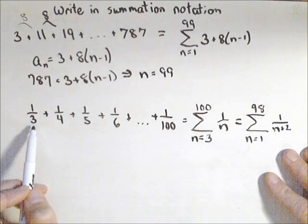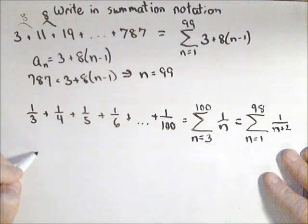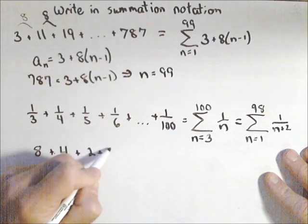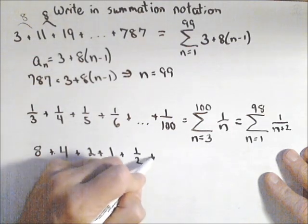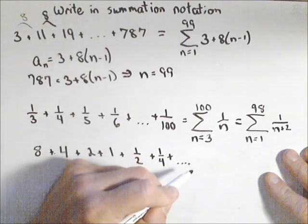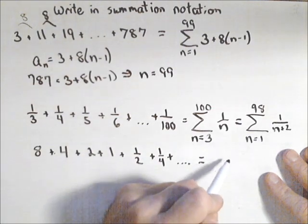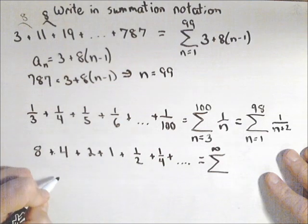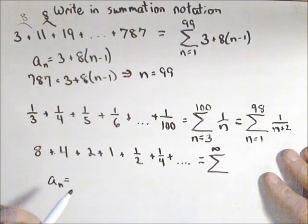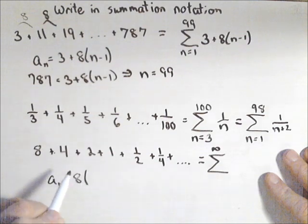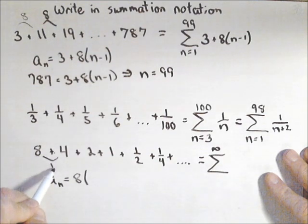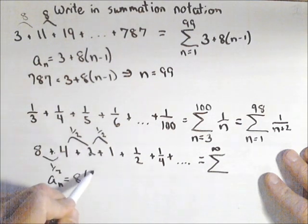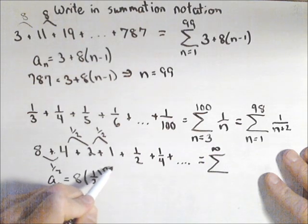So the big thing in writing something in summation notation, first you want to get your general term. Let's say we had a geometric: 8 plus 4 plus 2 plus 1 plus 1 half plus 1 fourth and so on. Now if it ends in dot dot dot, it's automatically infinite. So we already know the top is infinity. We need the nth term. For a geometric, it's the first term times our common ratio. Well notice what's happening. They're getting cut in half each time. So we have a common ratio of 1 half to the n minus 1.